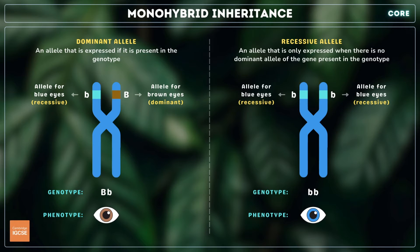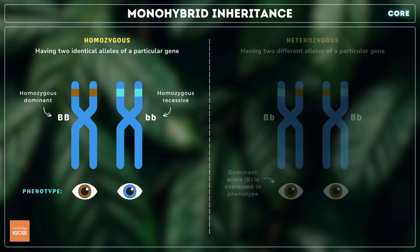If both a dominant and a recessive allele are present, the dominant allele will override the recessive allele, resulting in the expression of the trait that it codes for. In the case of eye colour, the allele that codes for brown eyes is dominant, and the allele that codes for blue eyes is recessive. This means that if both alleles are present, their eyes will be brown and not blue. If an individual possesses two identical alleles, they are said to be homozygous for that gene.